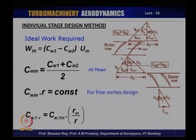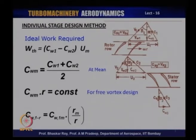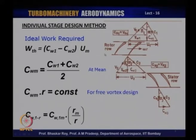On the right-hand side are the velocity triangles representing a particular section — which could be the hub, root, mean, tip, or any other section. For every section you need this whole set of velocity diagrams, and the rotor and stator of that particular radial station must have the work done determined. The mean C_W through this blade is (C_W1 + C_W2) / 2, and that is the mean whirl component operating on this rotor row.